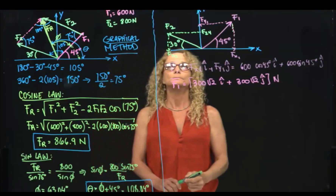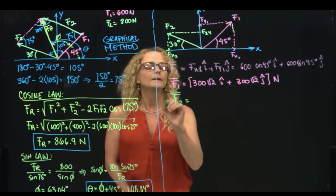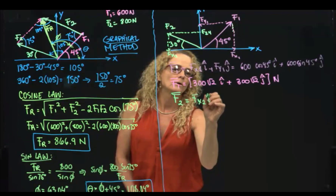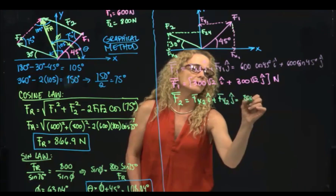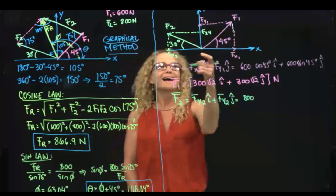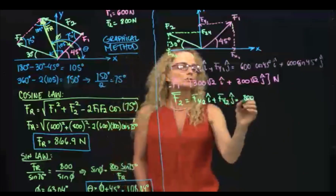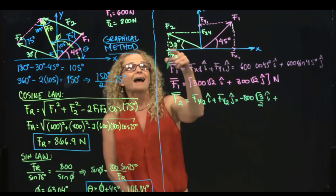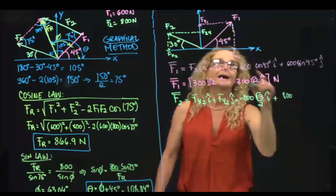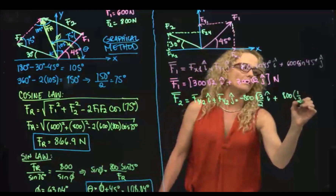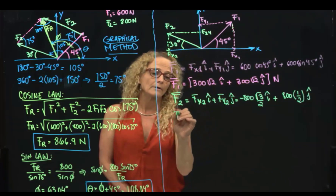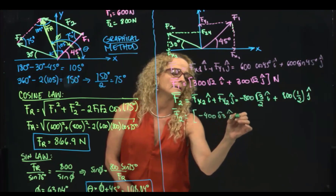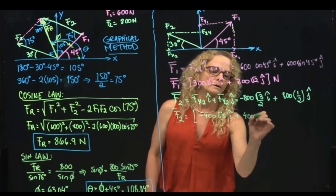Let's do F2. F2 will be equal to this force, which is 800. The adjacent is the cosine, and it's on the negative side of x. So it will be negative 800 cosine of 30, which is negative √3/2, in i. And the opposite, which is the sine, will be 800 times 1/2 on the positive side of y, in j.